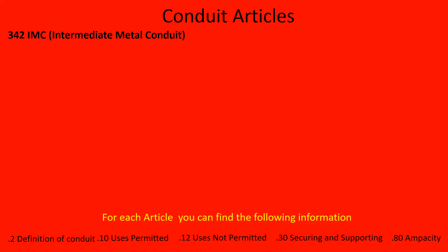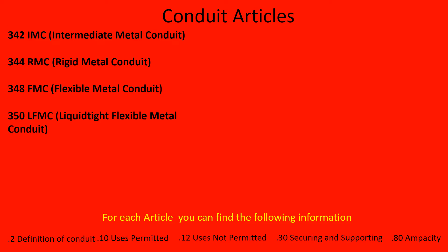The first one is Article 342, IMC, intermediate metal conduit. 344 is RMC, rigid metal conduit. 348 is FMC, flexible metal conduit. 350 is LFMC, liquid tight flexible metallic conduit — that's what we call seal tight. It's the flex with the metal inside, the liquid tight flex that has the metal inside of it.